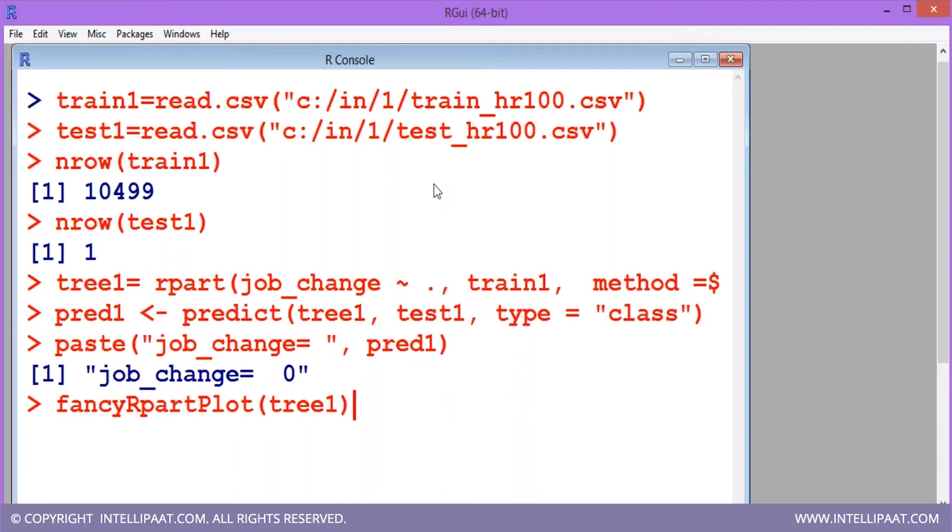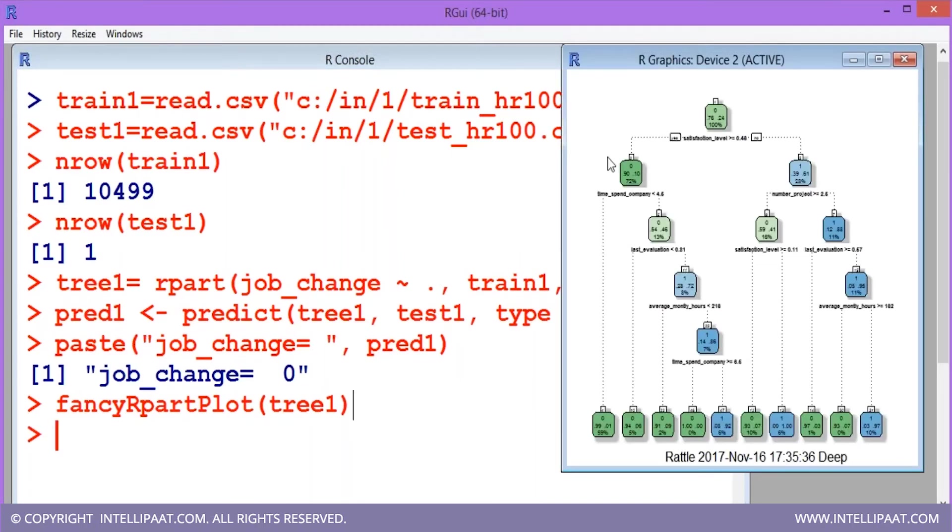Now I am going to print the graphical report of this tree. What you can see, a decision tree has been made. This is how the decisions are made in this algorithm.